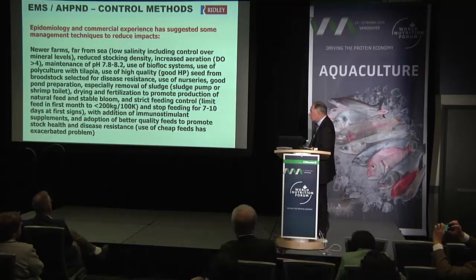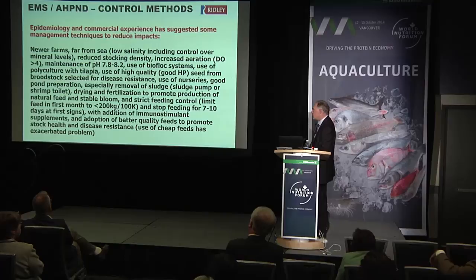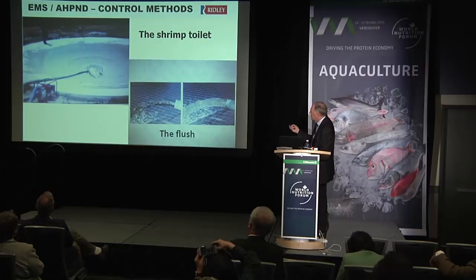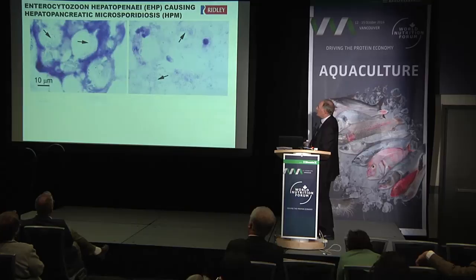Strict feeding control is very important — you have to reduce and stop feeding as soon as you notice a problem coming; that helps them recover. Using better quality feeds that promote stock health and disease resistance is also important. There's a picture of the shrimp toilet and the water coming out — when it's black, you keep flushing the bottom of the pond until it turns clear, then you turn it off.